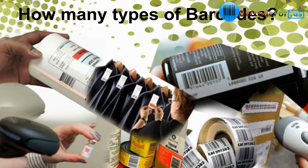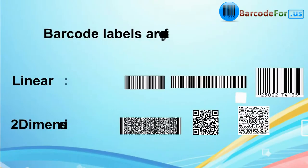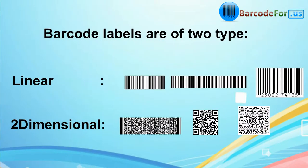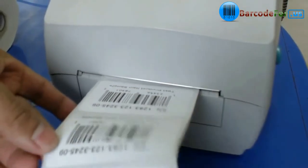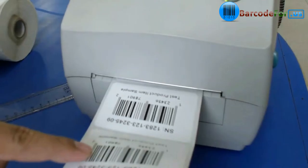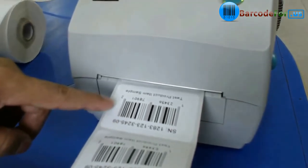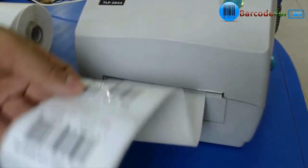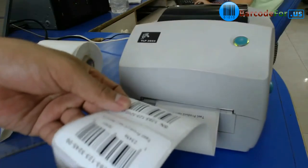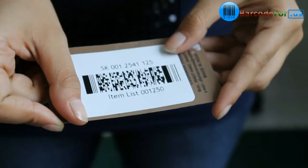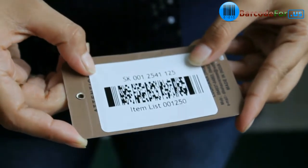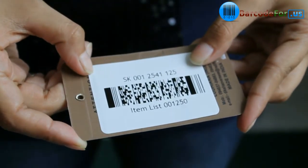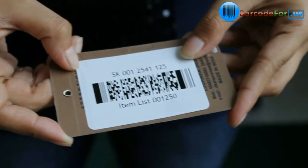How many types of barcodes? Barcode labels are of two types: linear and two-dimensional. Linear barcode is made up of lines and spaces and encodes data only in one dimension. 2D is a two-dimensional way to represent information, and it encodes more data per unit in comparison to linear.